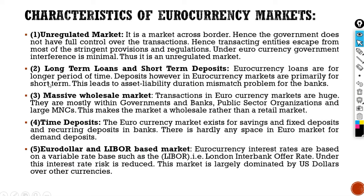The second characteristic is that it involves long-term loans and short-term deposits. Euro currency loans are for a longer period of time. However, the deposits in Euro currency markets are primarily for short term. This leads to an asset-liability duration mismatch problem for the bank. So in Euro currency, the loans are for a longer period of time, but the deposits are for a shorter period of time, which can create a mismatch problem for the bank.